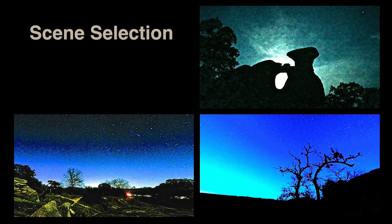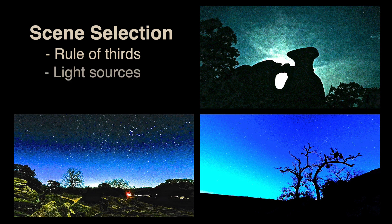Scene selection is critically important for a balanced and interesting video. Follow the photographic rule of thirds — place the subject towards the corner of a frame rather than the center. Consider light sources such as the moon, artificial lights, and reflection from clouds and haze. They will create interest and will impact the visibility of stars, planets, airplanes, and so forth. Camera settings need to be adjusted to account for these factors.